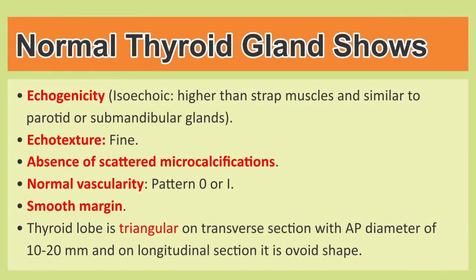Whenever we are doing the thyroid ultrasound we will consider the echogenicity, the ecotexture and also the calcifications, the vascularity and the margins. The normal thyroid gland echogenicity is isoechoic. It means that it is a little bit brighter or whitish as compared to the strap muscles, and it is the same in echogenicity to the parotid and submandibular glands.